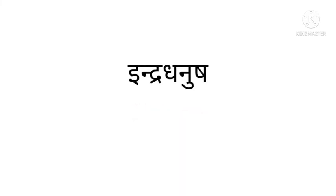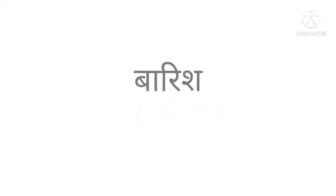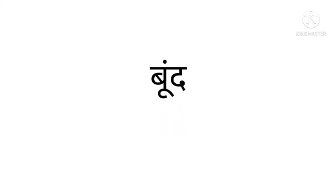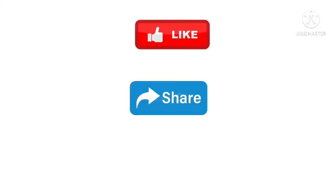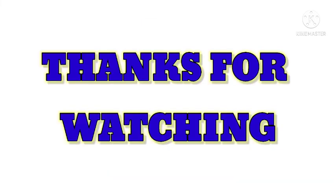Next word is 'taray' — we say in English: stars. Next word is 'indradhanush' — we say in English: rainbow. Next word is 'barish' — we say in English: rain. Next word is 'boond' — we say in English: drop. If you like this video, don't forget to like, share, and subscribe to my channel. Thanks for watching.